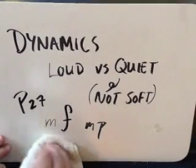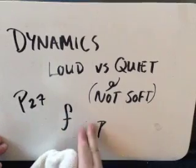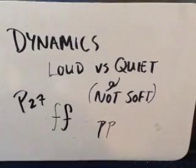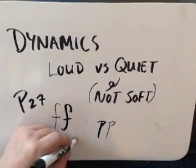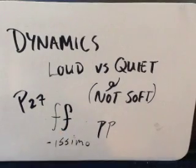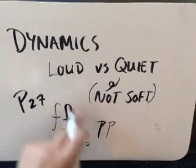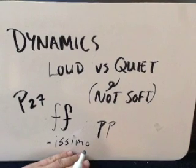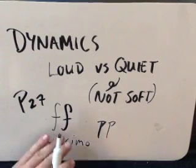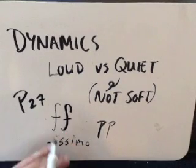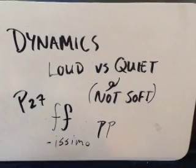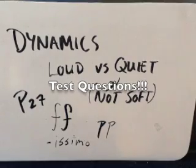You can also double up your F or P. When you do that, you add -issimo to the end. So forte becomes fortissimo, and piano becomes pianissimo. That just means much more of whatever it is: forte is loud, fortissimo is very loud; piano is quiet, pianissimo is really quiet. You have a table on page 27 in your book with all of this information.